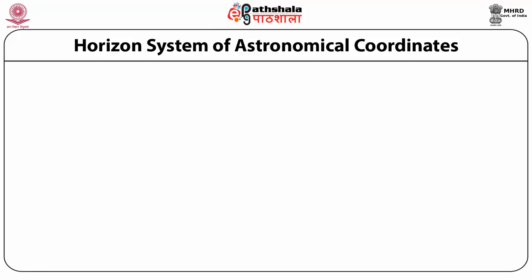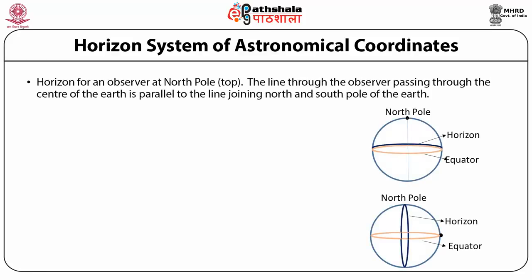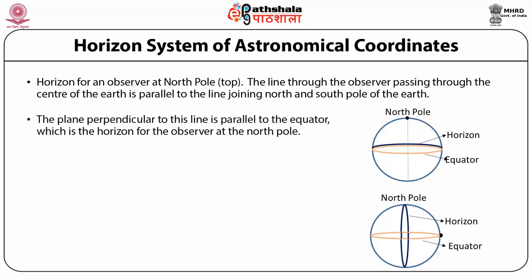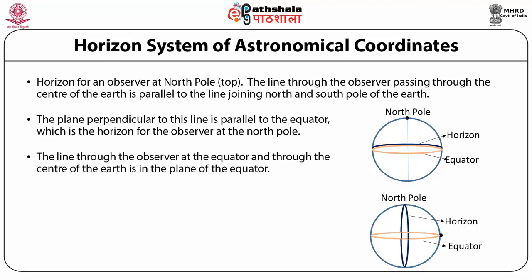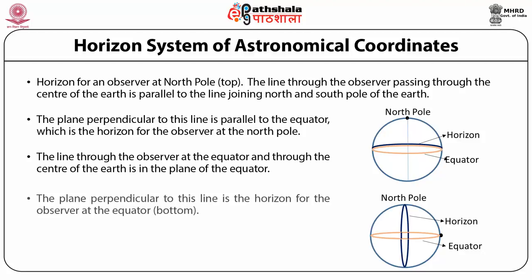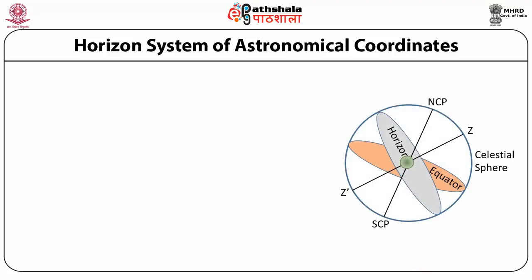We will see two examples of horizon. For an observer at the north pole, the plane perpendicular to the line through the observer and center of Earth is parallel to the equator — that is the horizon. For an observer at the equator, the line through the observer and the center of Earth lies in the plane of the equator, and the perpendicular plane is the observer's horizon. The projection of the equator on the celestial sphere gives us the celestial equator; similarly, the projection of the horizon gives us the celestial horizon. Both are great circles.